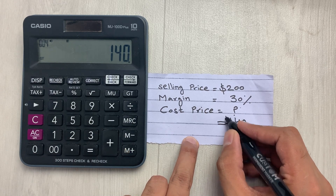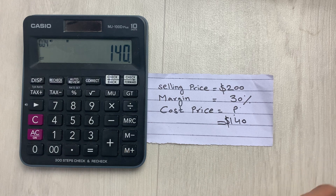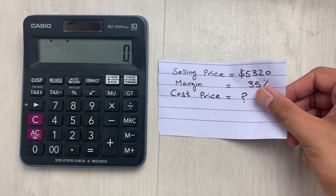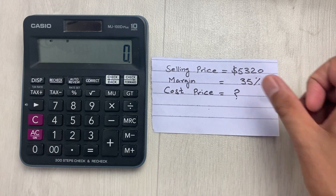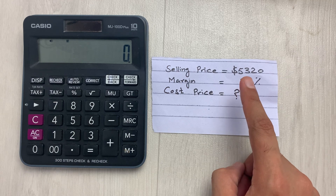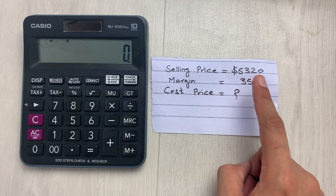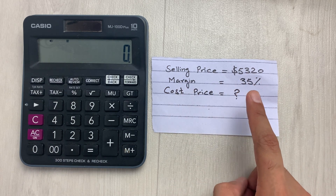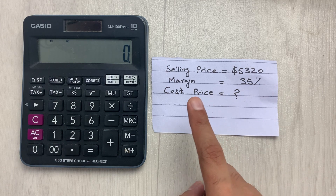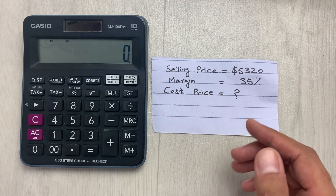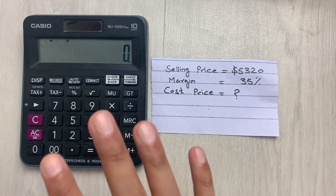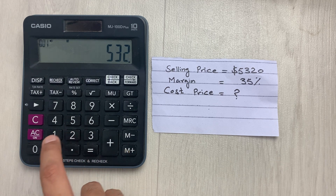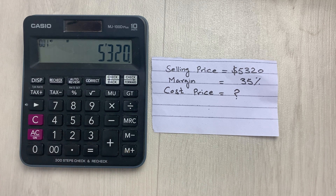Let's move to another example. We have an item and the selling price of that item is $5,320 and the margin is 35%. So what will be the cost price of that item? First of all on our calculator we will type 5,320.